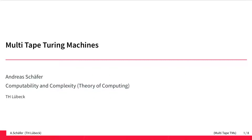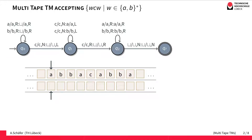This video is about Turing machines with more than one tape — so-called multi-tape Turing machines. The extension to multiple tape Turing machines is actually quite straightforward: instead of one tape you have two or more tapes. It's also possible to have three, four, or even more tapes, and each tape has its own read and write head.